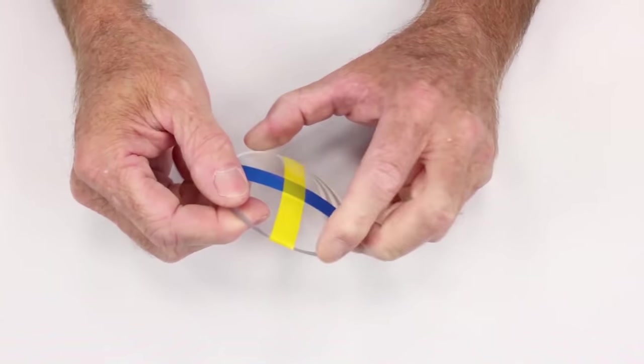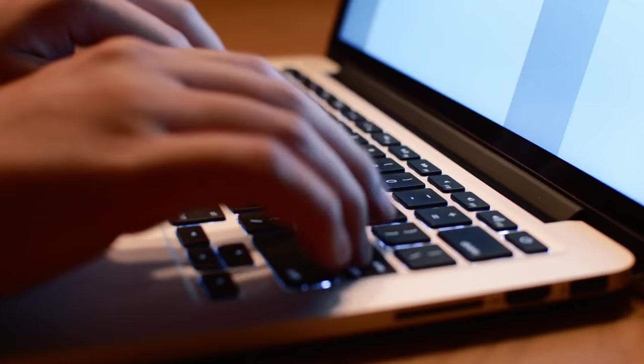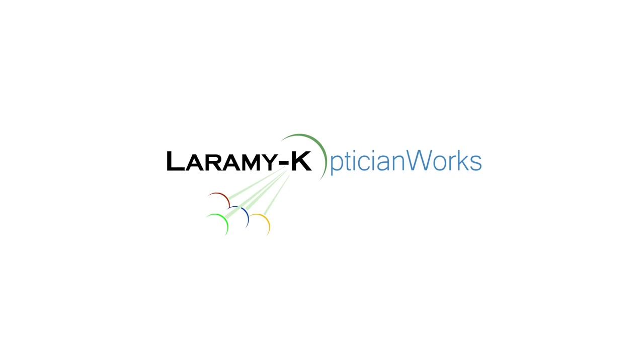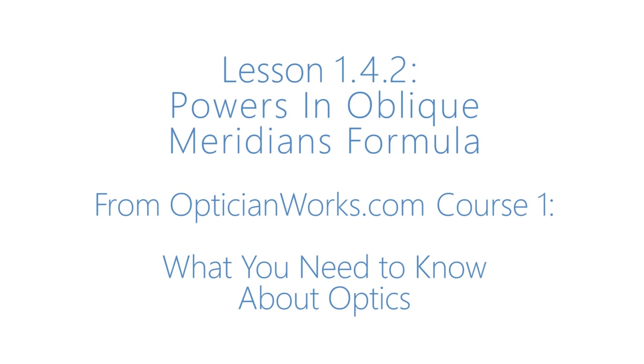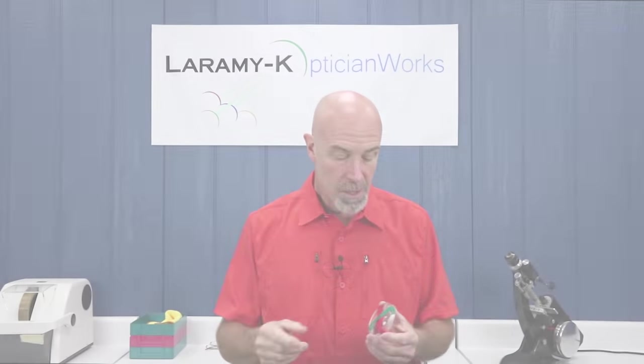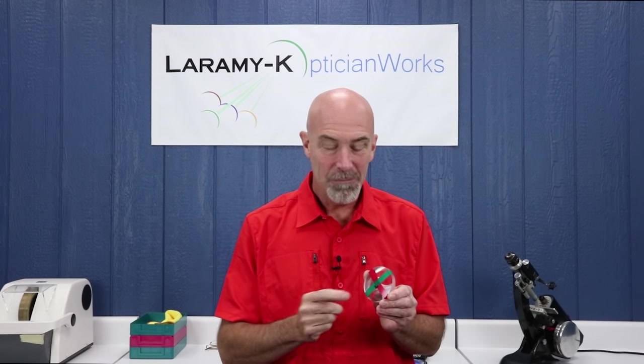Today we're going to be talking about the power in oblique meridians formula. We started with the optical cross, this lens. We talked about the two principle meridians or power that are on here. They're 90 degrees apart. We can always find them by looking at the script and doing flat transposition.